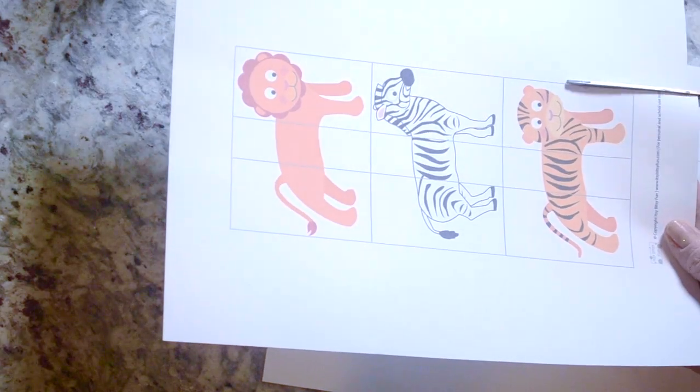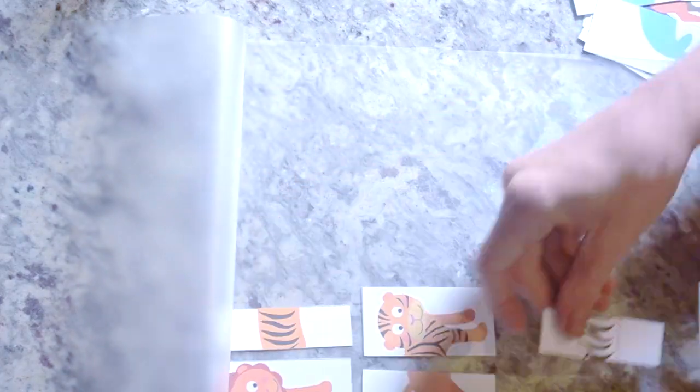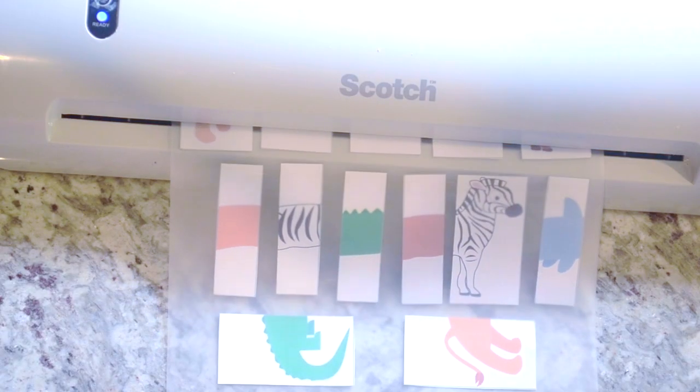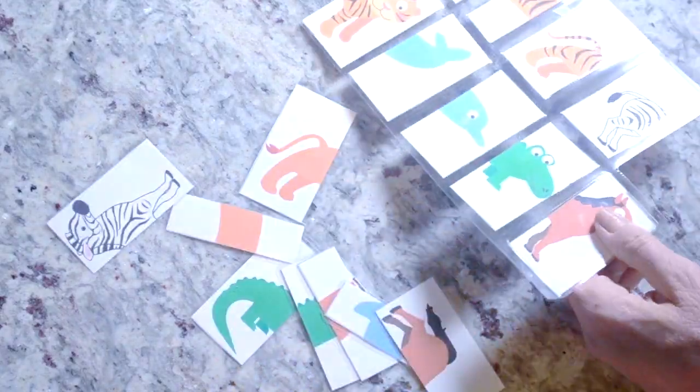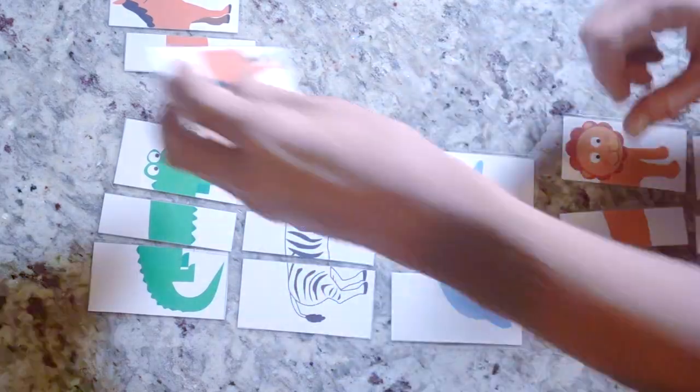My second bag is puzzles. You can use any puzzle you want, but I really like these because you can mix and match them and kind of have fun with them that way. I'm going to go ahead and laminate these. They're all printed out on card stock, which makes them a little bit thicker. And I kind of like these because she can make up her own unique animal.